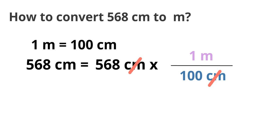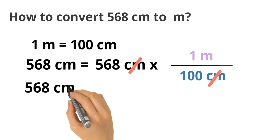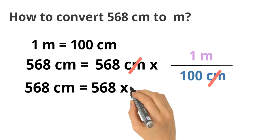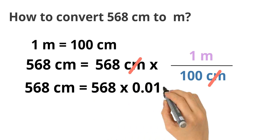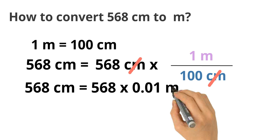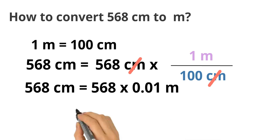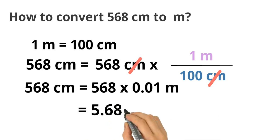Rewriting the equation, we have 568 cm is equal to 568 multiplied by 0.01 meter. This gives us 5.68 meter.